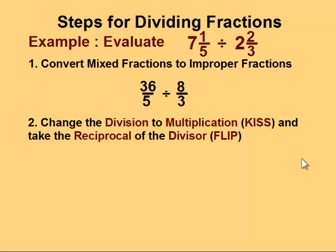And then, we take the reciprocal of the divisor, in this case 8/3. And to take the reciprocal of a fraction, all you do is you change the numerator to the denominator, and the denominator to the numerator. So it's basically flipping the fraction over. So 36/5 divided by 8/3 becomes 36/5 times 3/8.